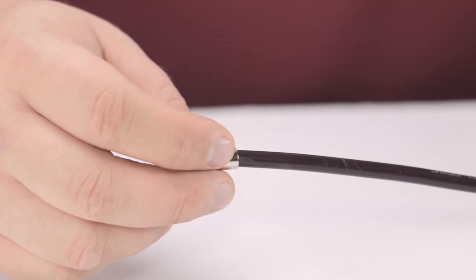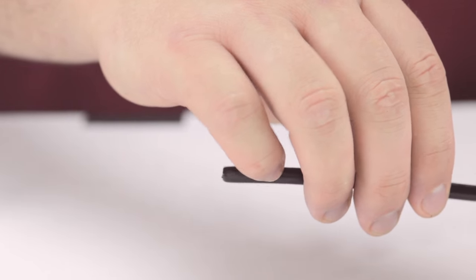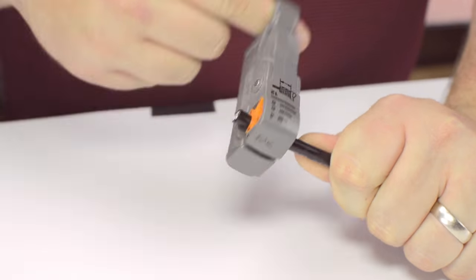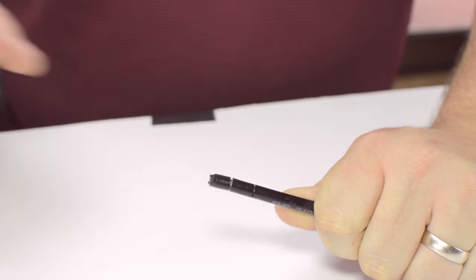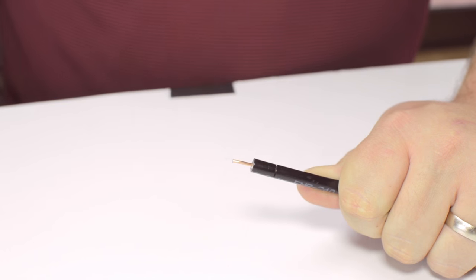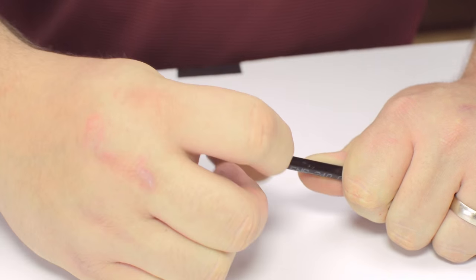Start by inserting the ferrule over the outer jacket of the cable. Then using your cable stripper, strip back the outer jacket and dielectric. The advantage of using a cable stripper is that it will strip back the jacket and dielectric at the same time.